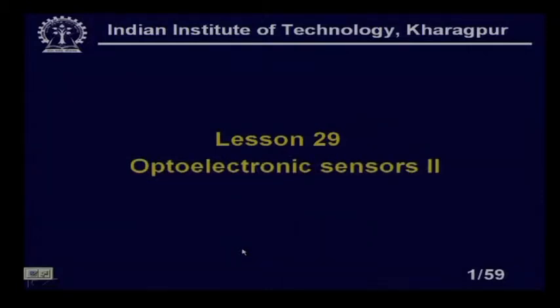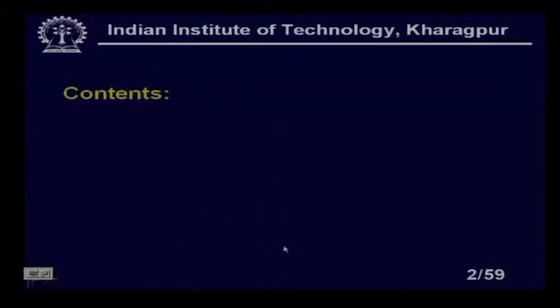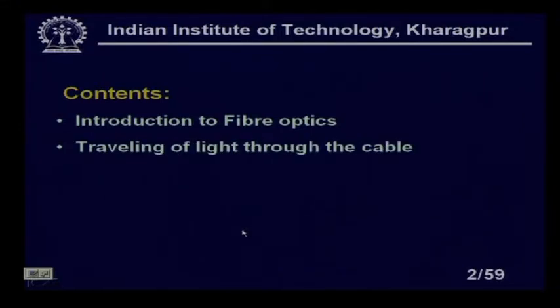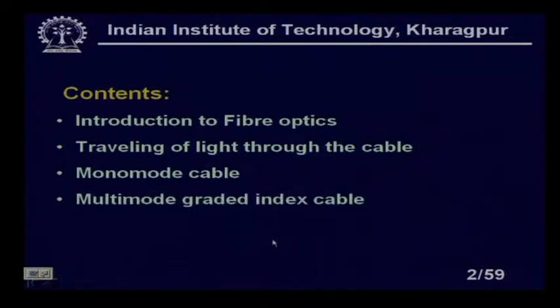Optic Electronic Sensor 2 contains: Introduction to Fiber Optics, Travelling of Light through the Cable, then Monomode Cable, Multimode Gradient Index Cable, and Fiber Optic Sensors. These are the basic things which we will cover.